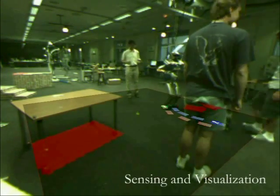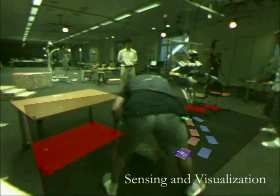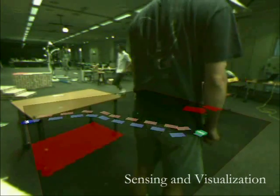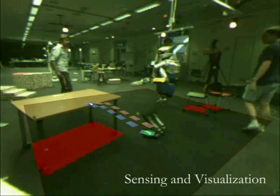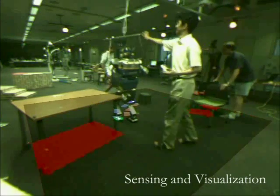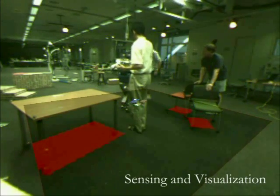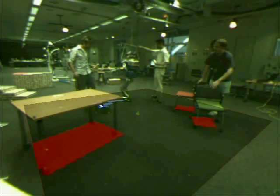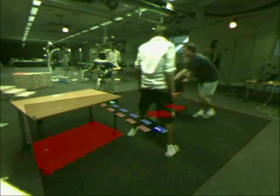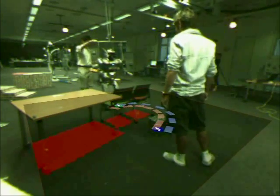Here is a view of the same experiment using our visualization techniques to superimpose the sensed environment information and currently planned path onto the real world. The red areas represent obstacles. The sequence of footsteps the robot is planning to take to reach the goal is updated in real time.